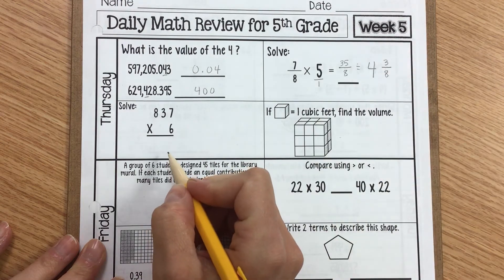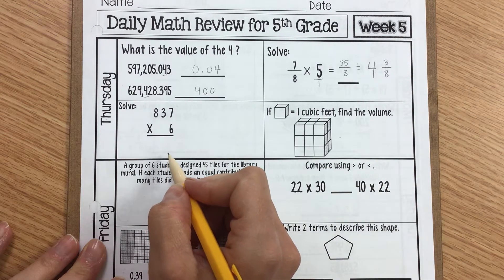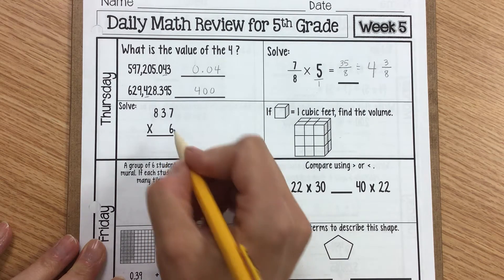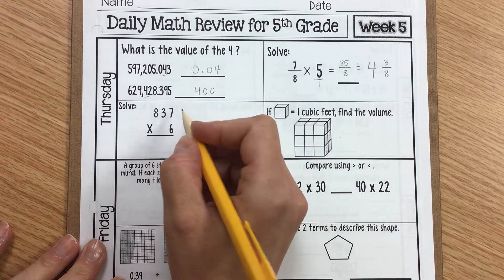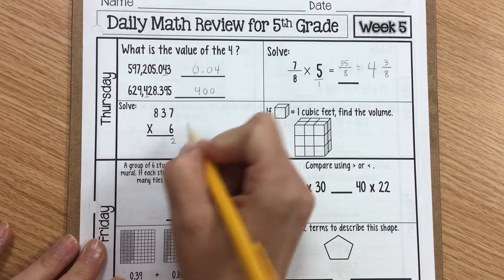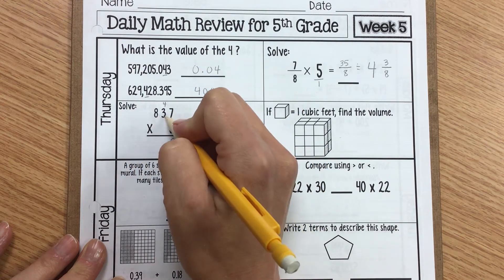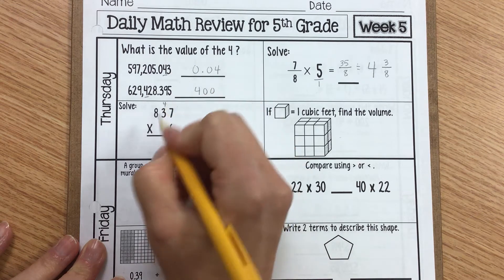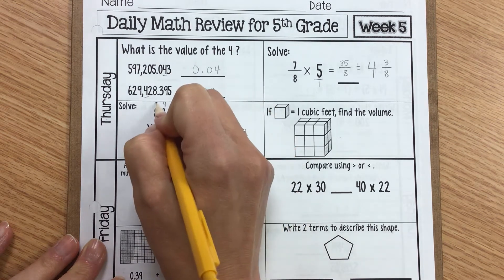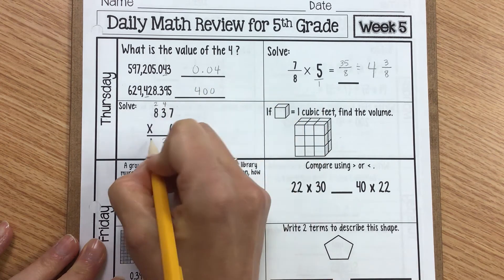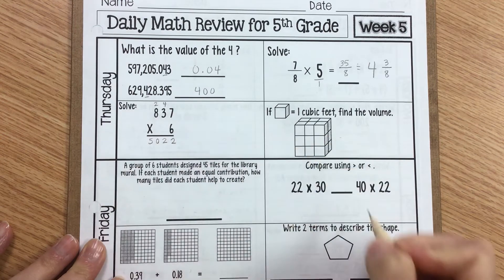Now we'll come down here to multiplication. 837 times 6. So we have 6 times 7, and that is 42. So 2 and carry my 4. 6 times 3 is 18, plus 4 is 22. 8 times 6, plus 2 gives me 50.